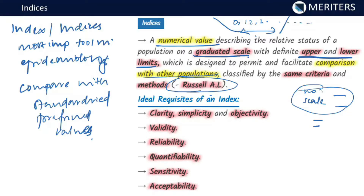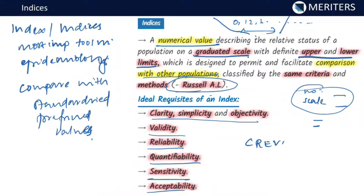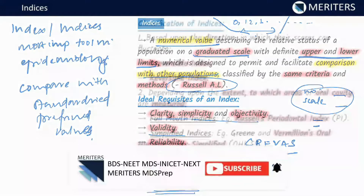The ideal requisites of an index are clarity, simplicity, objectivity, validity, reliability, quantifiability, sensitivity, and acceptability — remembered by the mnemonic CREVASSE. It should be clear, simple, and objectively quantifiable. It should be valid for the current study, reliable, sensitive to small changes, and uniformly acceptable by all.